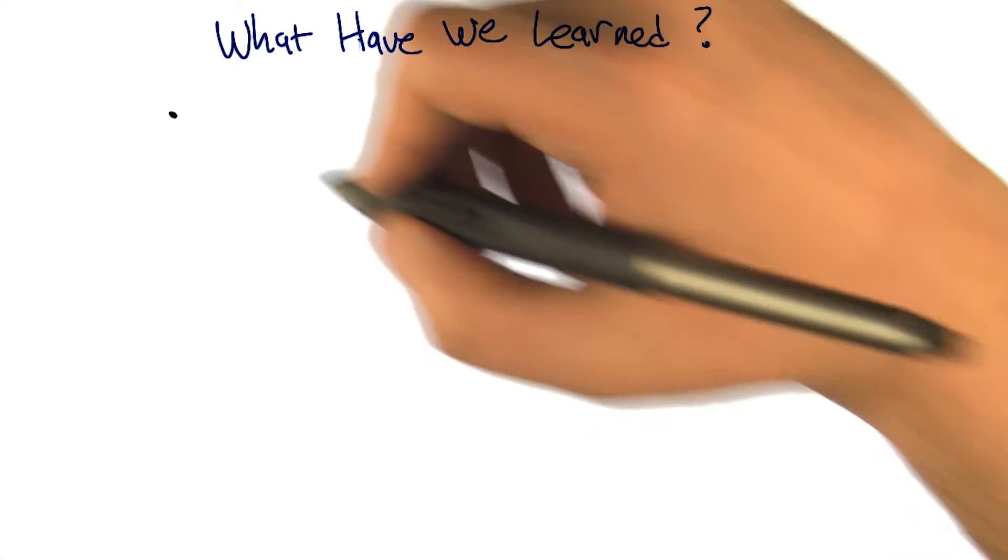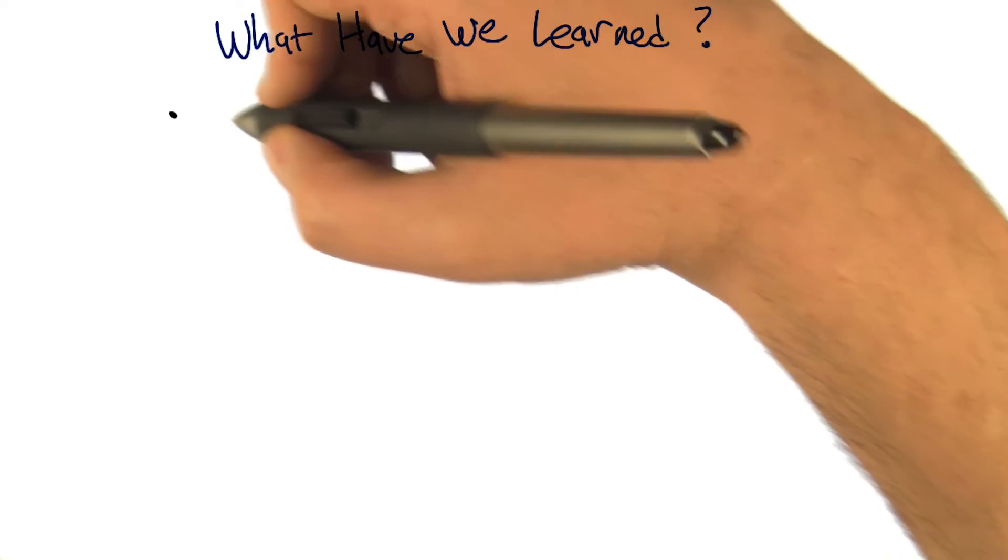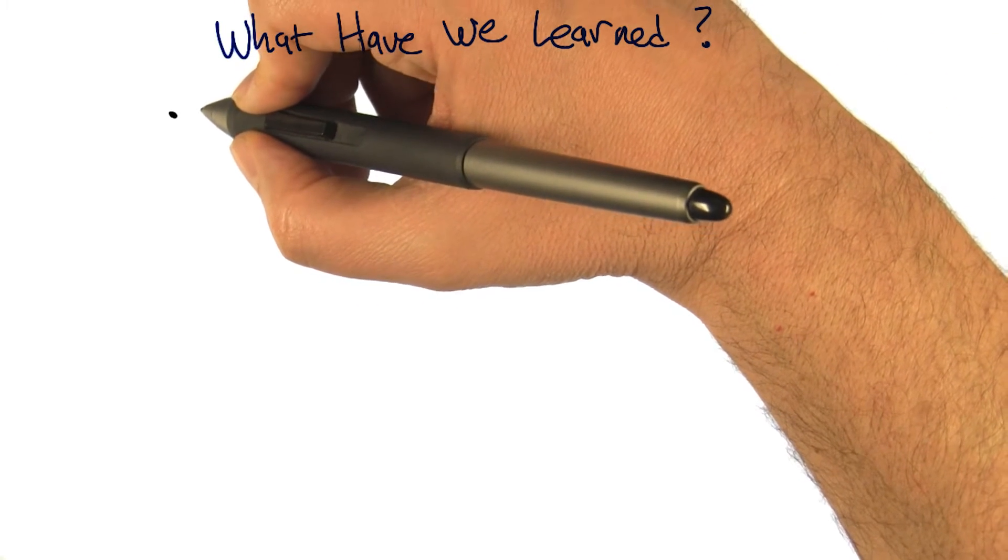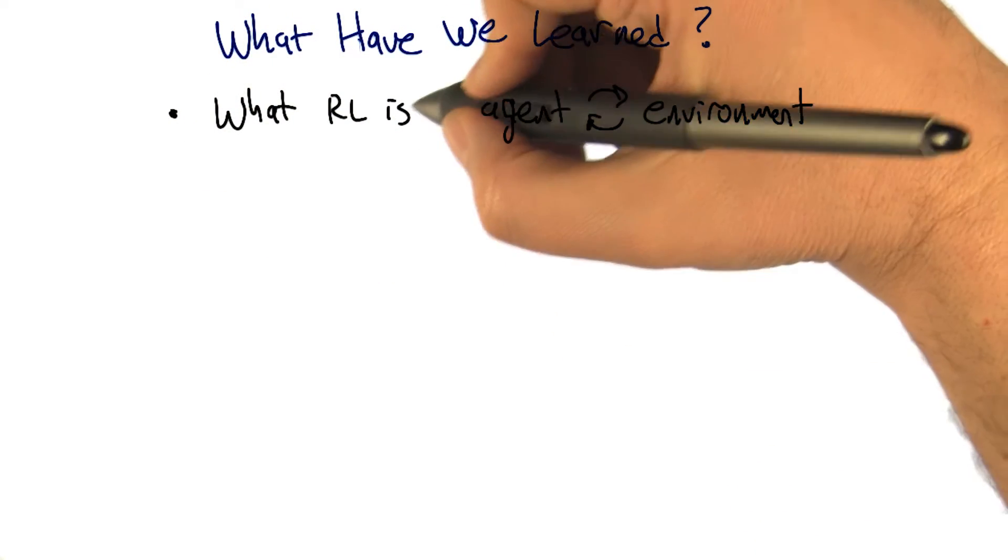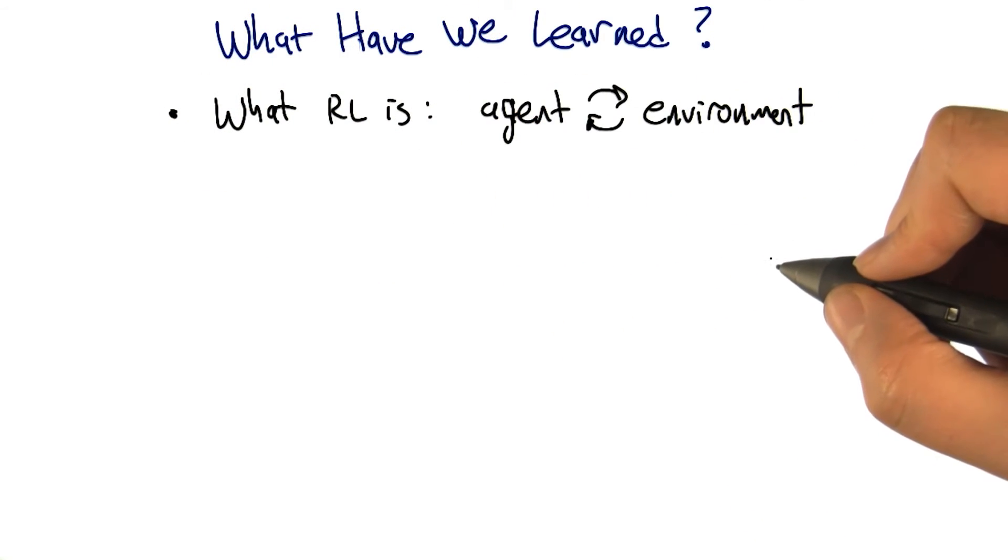So I think we learned a bunch of stuff, but we really learned three classes of things. We learned sort of what reinforcement learning is. All right, that's one class of things.